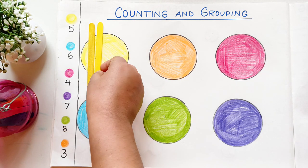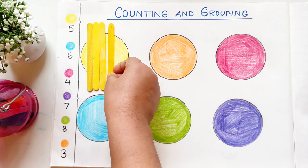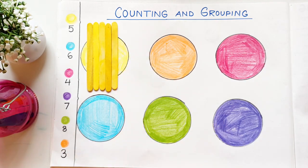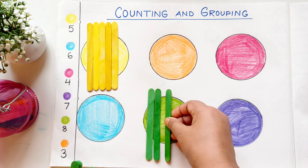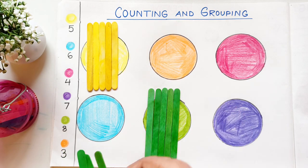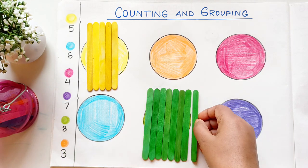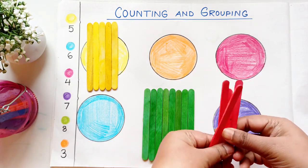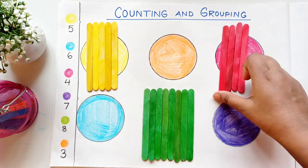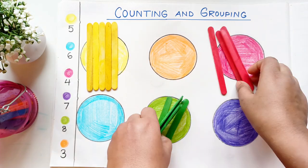Our first activity is all about counting and grouping. Here I have drawn a few numbers on the paper like five, six, four, seven, eight, nine randomly and given color coding dots above. The challenge for kids is to decode the color and put the correct number of sticks on the same color. This helps young kids practice their counting skills.